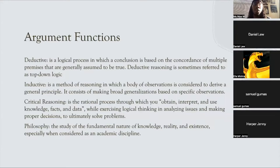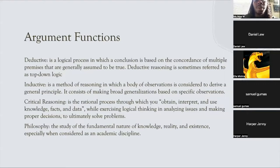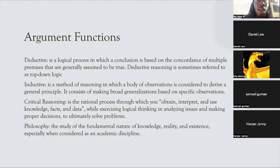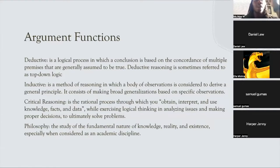Critical reasoning is the rational process through which you obtain, interpret, and use knowledge, facts, and data while exercising logical thinking and analyzing issues to solve problems. For example, pointing out that China has specific sovereign conditions different from Russia — just because Russia can't resolve conflicts with the U.S. doesn't mean China lacks more hegemony. That's critical reasoning, considering the specific independent variables that lead to a specific observation.